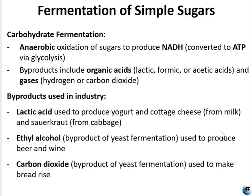Fermentation is a metabolic pathway used by anaerobic microbes to make energy by oxidizing sugars — simple sugars and carbohydrates — to produce NADH, which is converted to ATP via glycolysis. Byproducts of carbohydrate fermentation include organic acids, which lower the pH of the growth media, as well as gases, which can be observed if captured. Byproducts used in industry include lactic acid, ethyl alcohol, and carbon dioxide. Lactic acid is used to produce yogurt, cottage cheese, and sauerkraut. Ethanol is a byproduct of yeast fermentation used to produce beer and wine. Carbon dioxide, also a byproduct of yeast fermentation, is used to make bread rise.